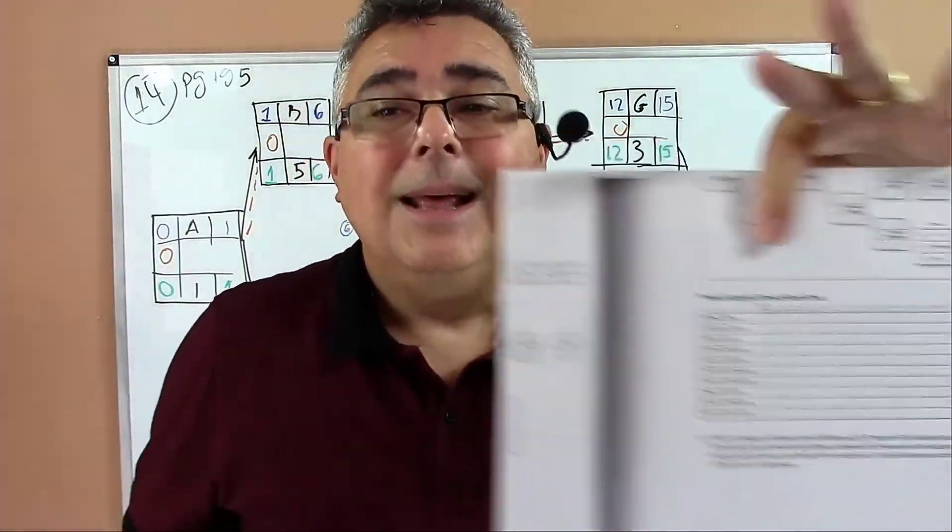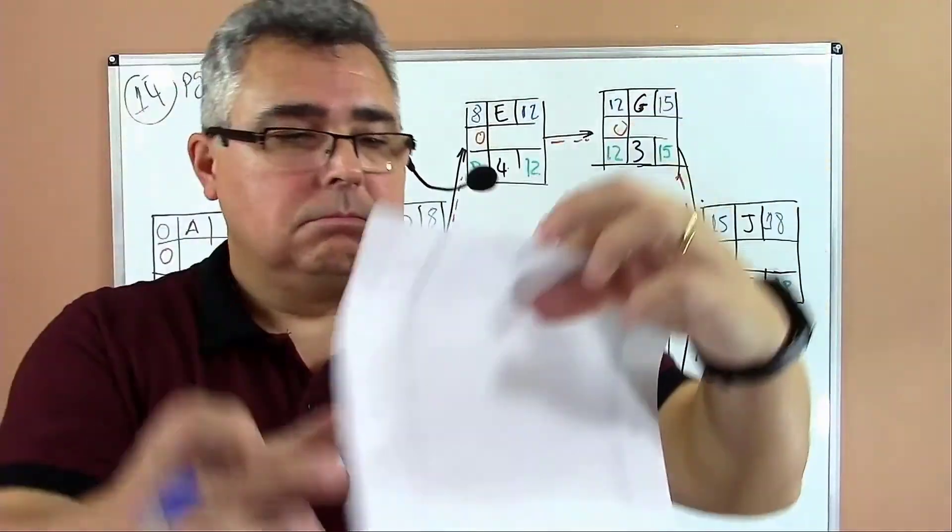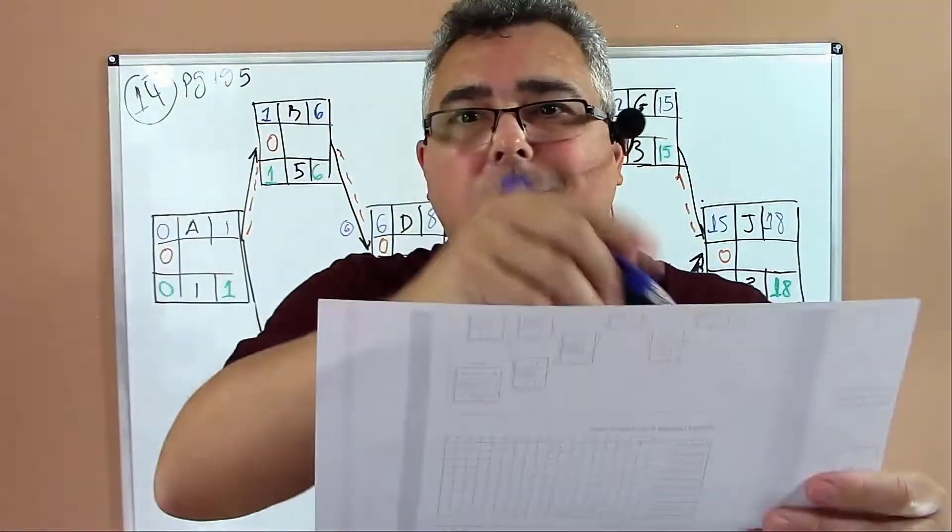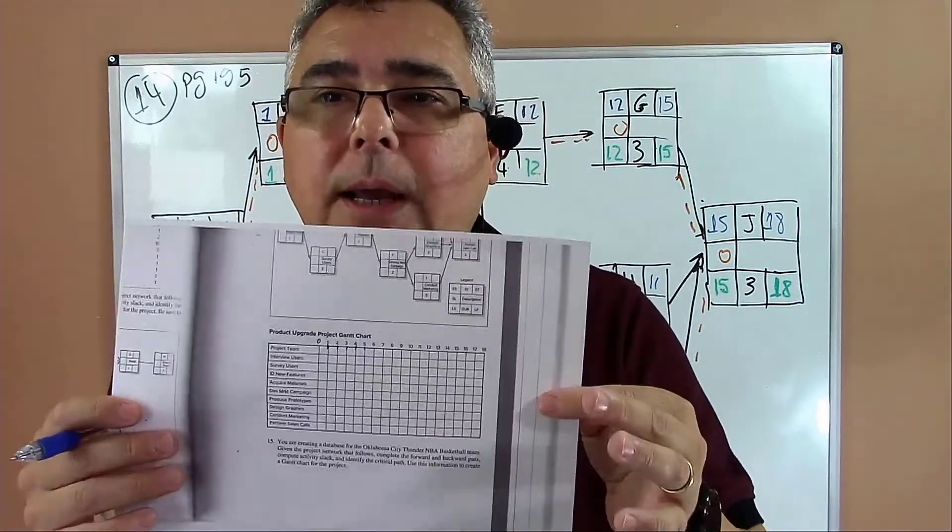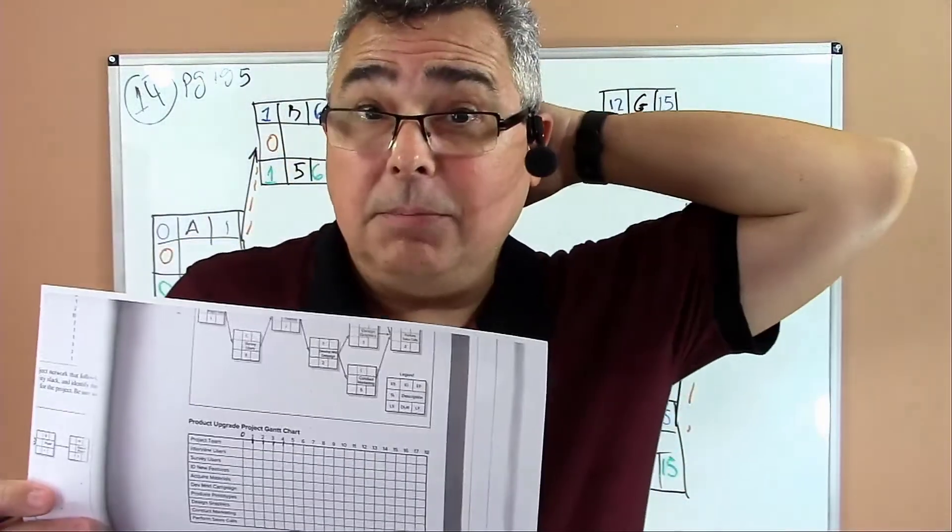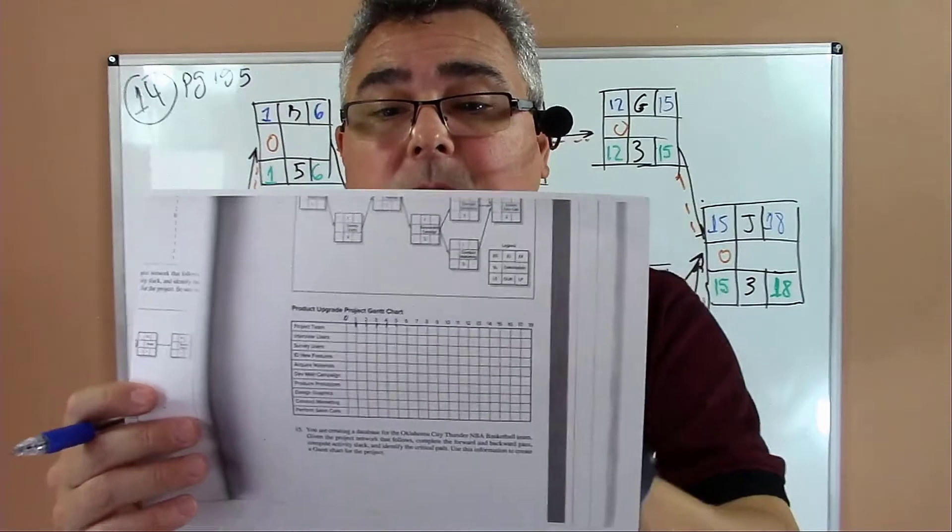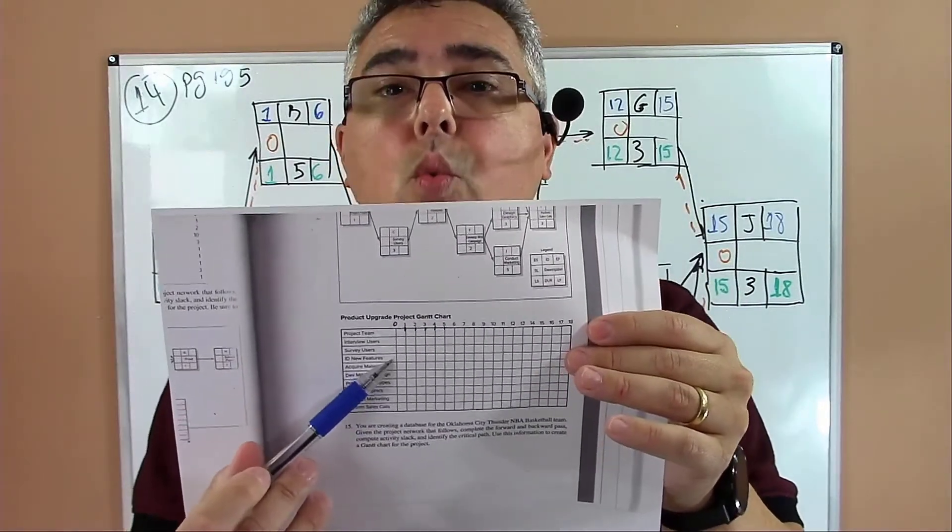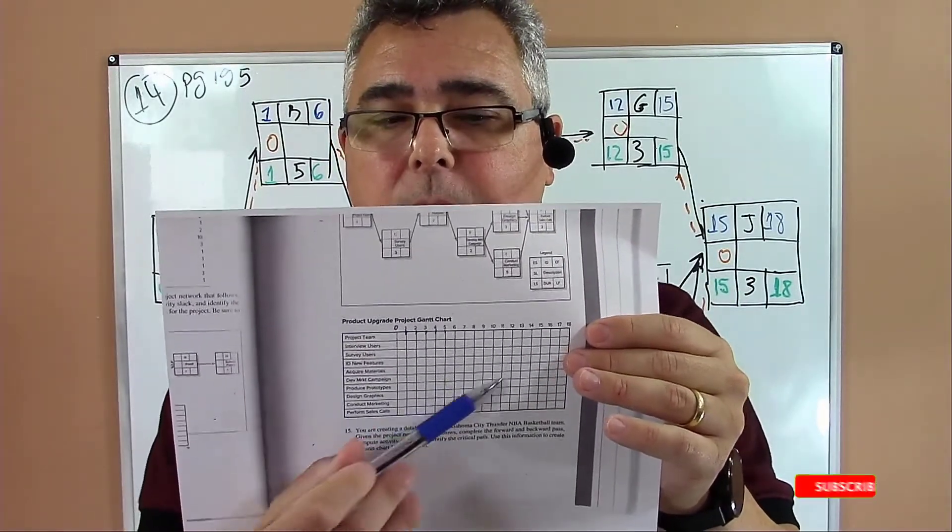So how we draw a Gantt chart. First you have to do a table like this. Then we'll be shadowing or painting these squares referent to the times. And each square here is one day. This is the Gantt chart.